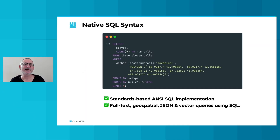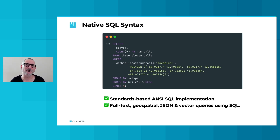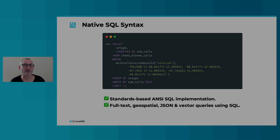Here's an example SQL query that demonstrates the multi-model power of CrateDB. Many US cities have a citizens hotline for reporting issues such as potholes in the road, streetlights that don't work, and other issues. New issues are usually reported by calling 311. As part of our dataset, we have records for 311 calls made in the city.